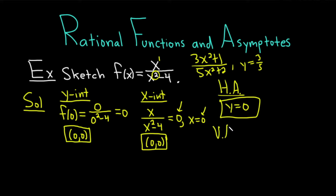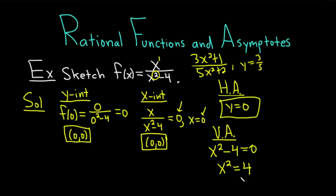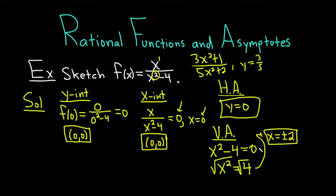For vertical asymptotes, you simplify first if possible. We can't really simplify in this problem — nothing cancels. Then you set the bottom equal to 0: x squared minus 4 equals 0. We can solve this by adding 4, giving x squared equals 4, then taking the square root of both sides. That gives us x equals plus or minus 2. Those are our vertical asymptotes.